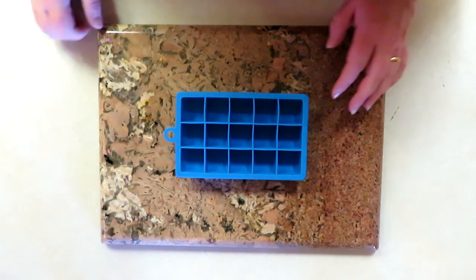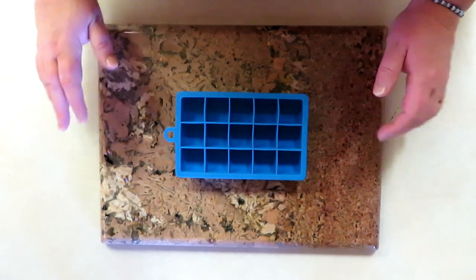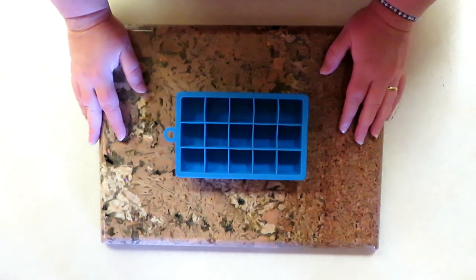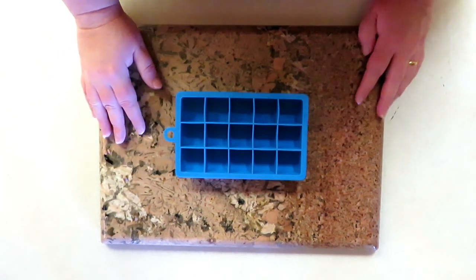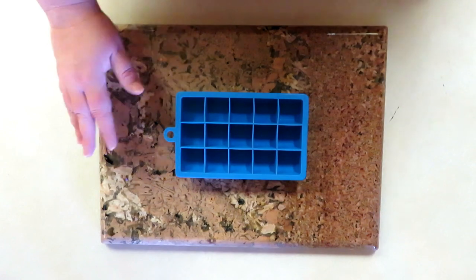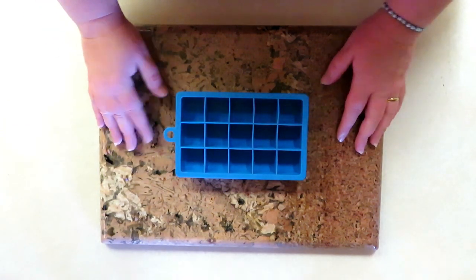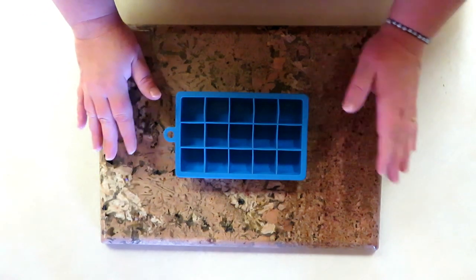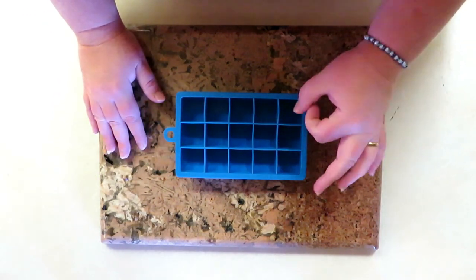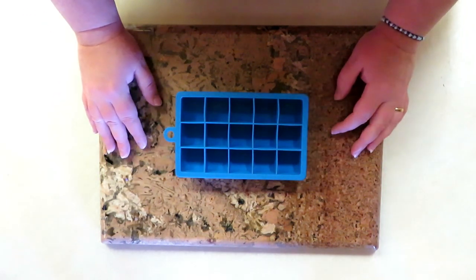Hello everybody out there, this is Maria with Desert Cloud Soapworks, and today I'm going to show you how to make an everlasting gobstopper soap based on the candy from Willy Wonka and the Chocolate Factory. We're going to do the original one, not those little round ones you can buy in the store, but the one that is kind of spiky looking from the original movie.